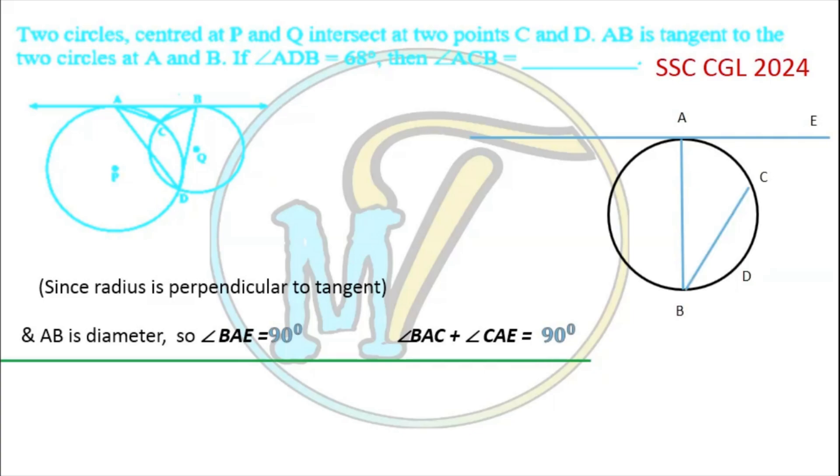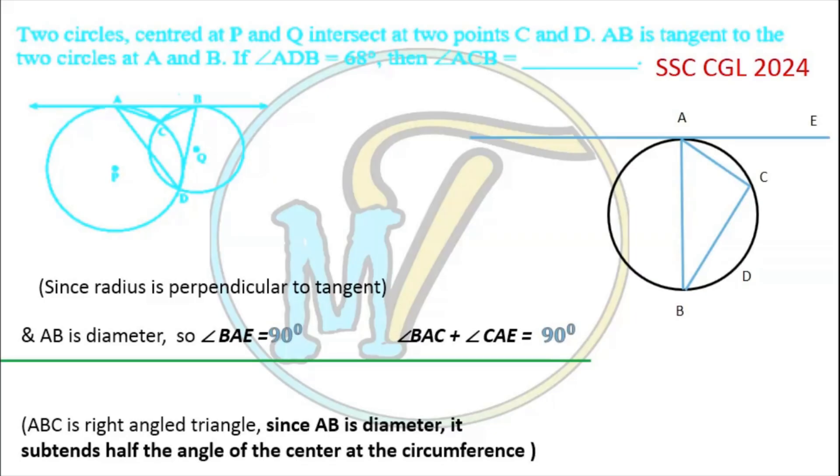Now let us draw a chord AC and join BC. Again from theorem, we know that since AB is diameter and AC is chord, so it will make an angle of 90 degrees at the circumference. So ABC is a right angled triangle.